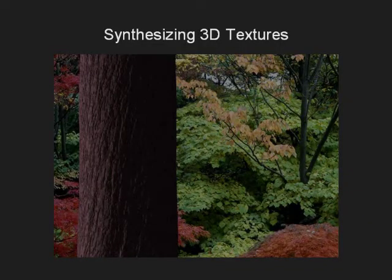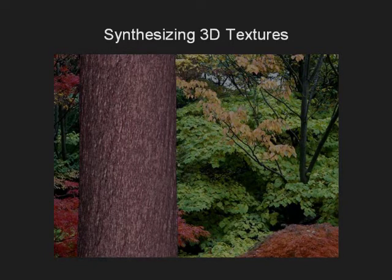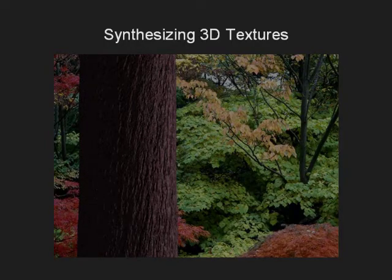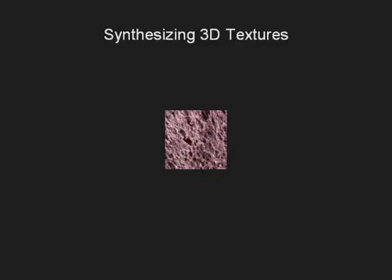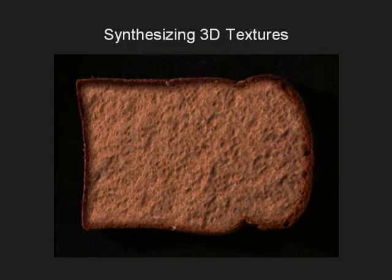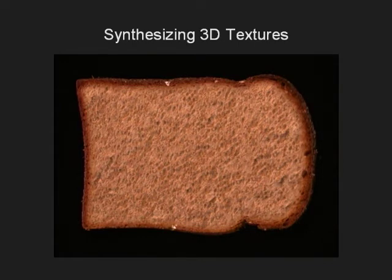The synthesized bark texture was wrapped around a cylinder to create a tree trunk. The trunk was then rendered under a moving point light source and inserted into an existing image. Observe how the cast shadows change as the light source is moved from left to right. Here is another example of 3D texture synthesis starting from the reconstructed bread texture, where the light source is also moved from left to right. Thus, from a single image of a 3D texture, we can recover its geometry and use that to synthesize novel 3D textures.